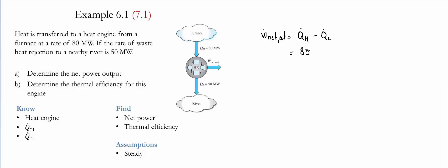In this case, we have 80 megawatts and what is rejected is 50 megawatts. Therefore, the net power output is equal to 30 megawatts.